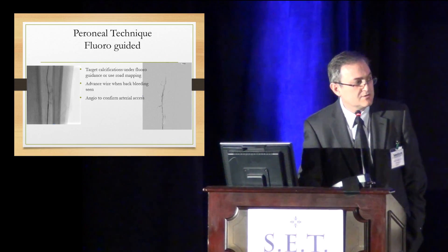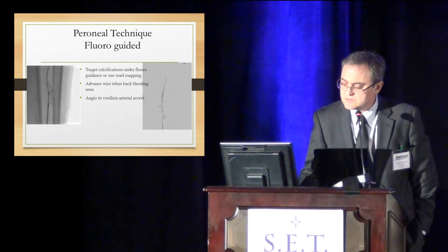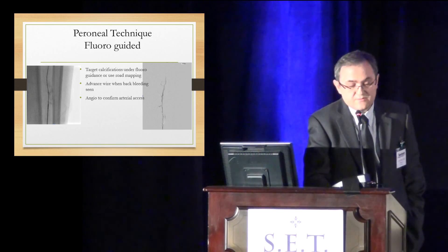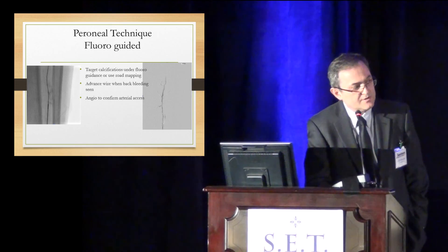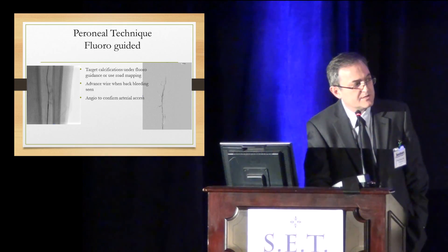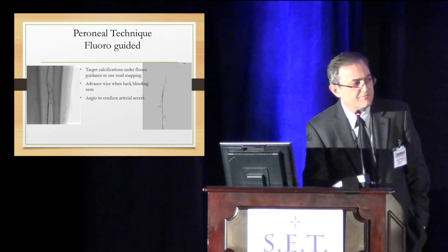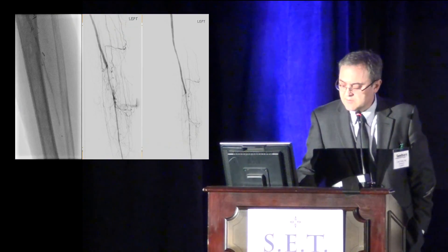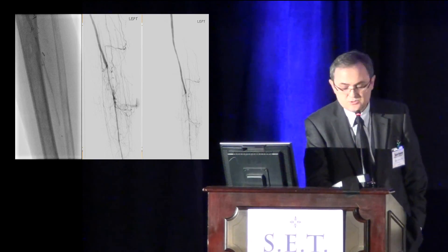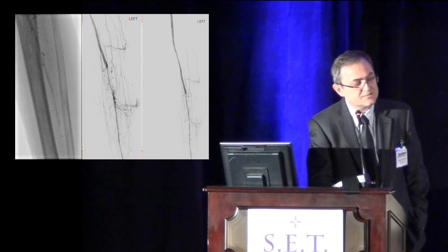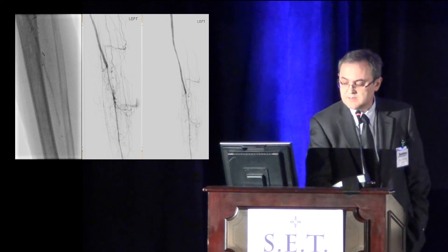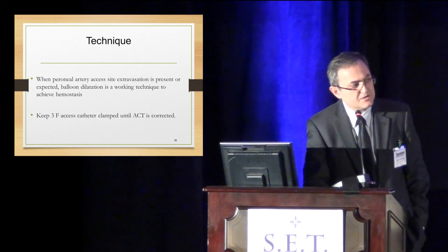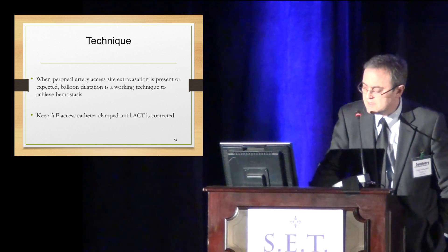The concern we feared at the very beginning was that it's too deep — maybe there are potential bleeding complications. This is the fluoro technique where we use calcium. In the first couple of cases, after access, we pulled the guidewire, advanced the guidewire further, put a balloon in a few minutes, did a couple of angiograms — in this specific case it only lasted a couple of minutes and the bleeding stopped. But recently I started using just a 3-French access catheter, clamping the catheter, and waiting for ACT to be corrected before we pull. So far, ten patients with peroneal access and we really didn't have any bleeding complications.